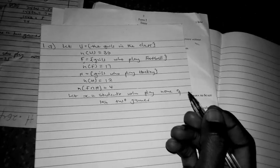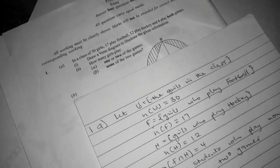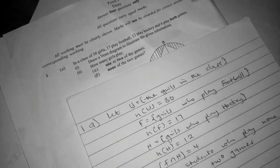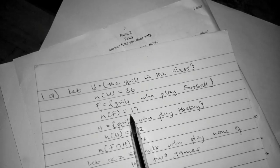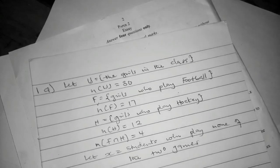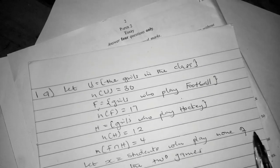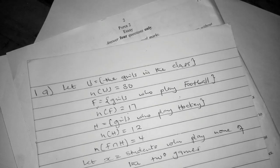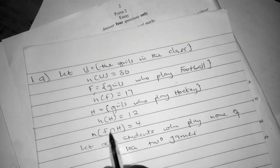Before you draw a Venn diagram, you have to look at those who play football only. To get those who play football only, subtract those who play both from total football players.